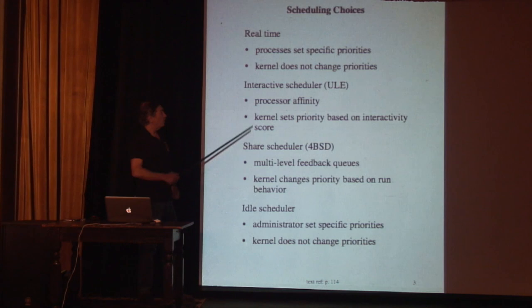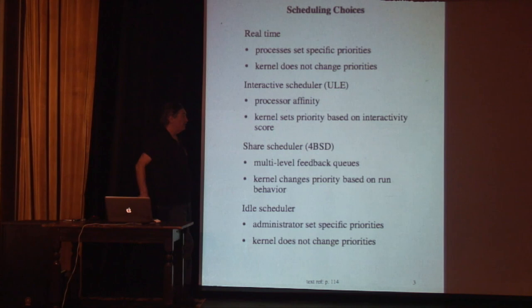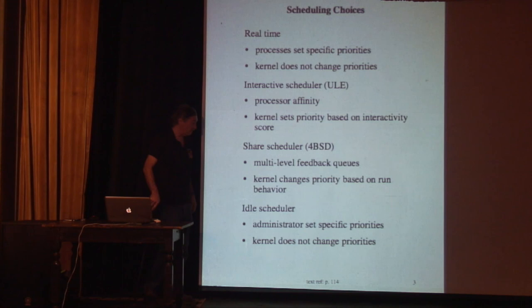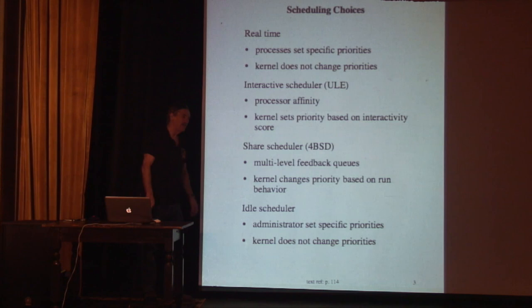ULE deals with processor affinity and actively calculates an interactivity score to figure out which processes are batch long-running computing processes and which ones users are interacting with, giving better priority and response time to interactive processes. The idle scheduler, much like the real-time scheduler, has priorities set by the system administrator and the kernel simply follows them. But unlike real-time, if an idle process goes into an infinite loop, it's not a problem because anything else that wants to run will preempt it.